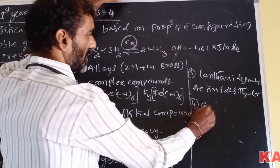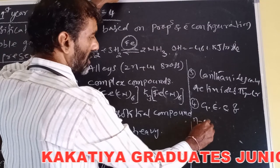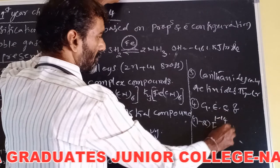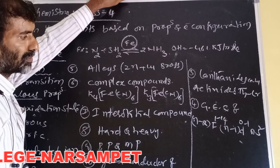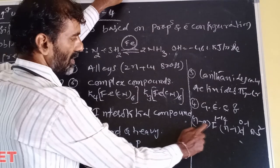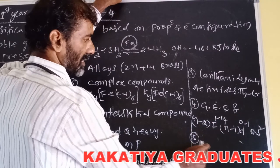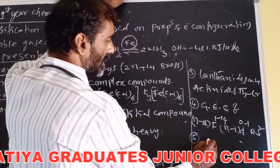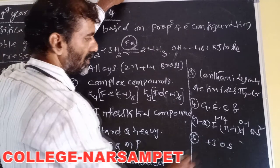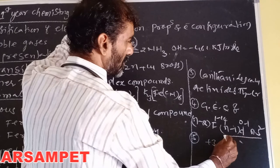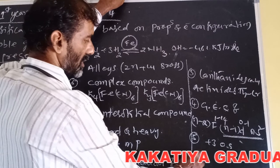The general electronic configuration of inner transition elements is: (n-2)f¹⁻¹⁴ (n-1)d⁰⁻¹ ns². These elements exhibit a plus three oxidation state because the last two shells have a similar electronic configuration.